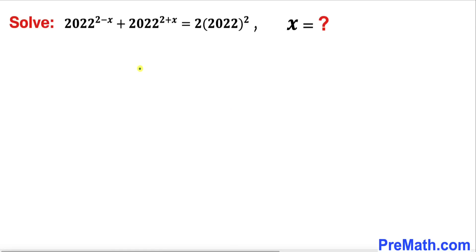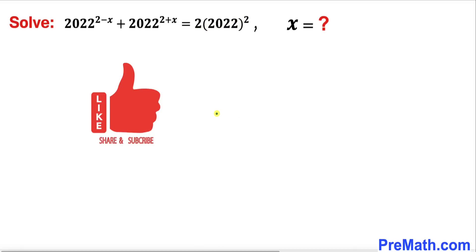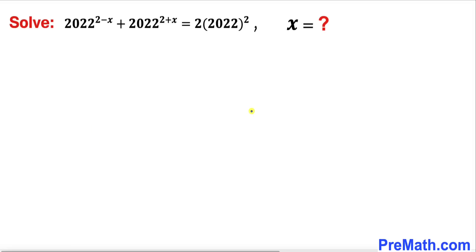Welcome to pre-math. In this video we are going to solve this given exponential equation: 2022 power (2 minus x) plus 2022 power (2 plus x) equals 2 times 2022 whole power 2. So let's go ahead and get started with the solution.